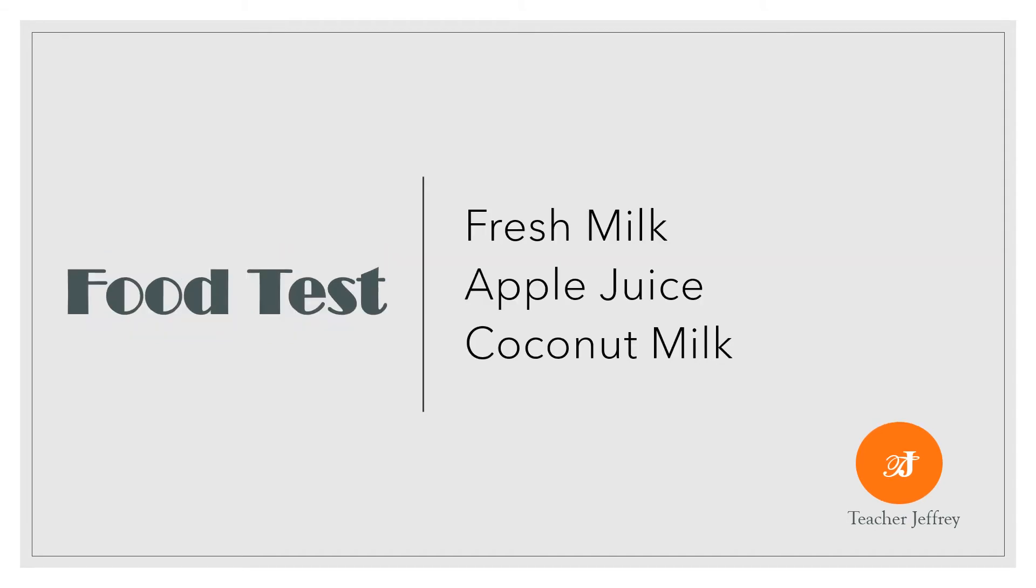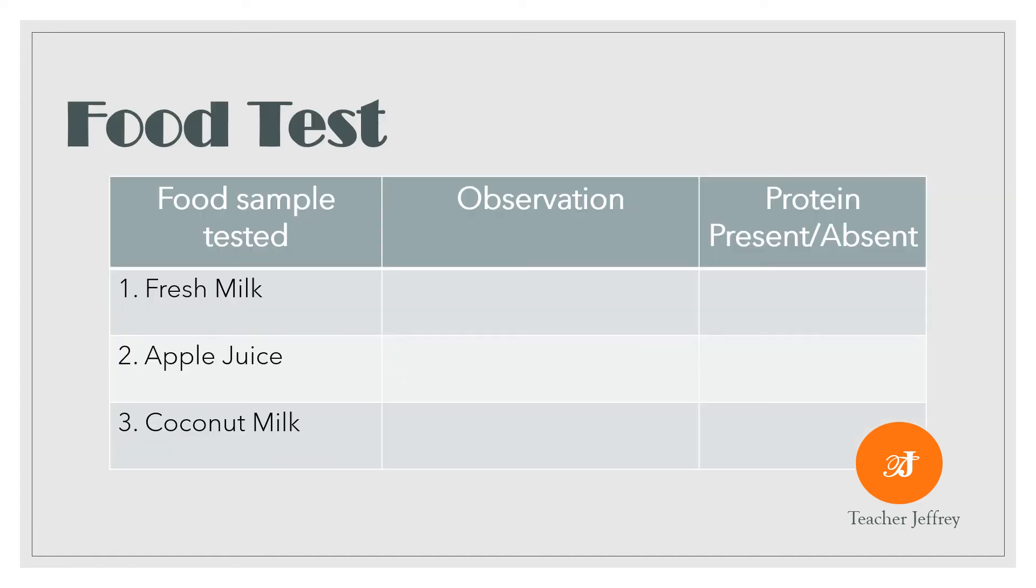Let us now proceed our experiment by testing these food samples: fresh milk, apple juice, and coconut milk. We will use this table to write our observation and interpretation. For our observation, we will write the color change, and for our interpretation, the presence or absence of protein in the food sample being tested.